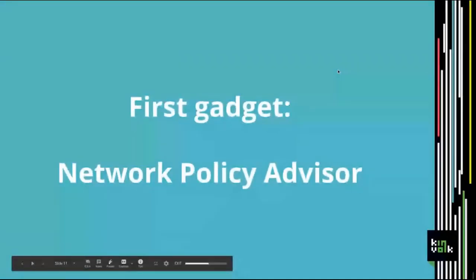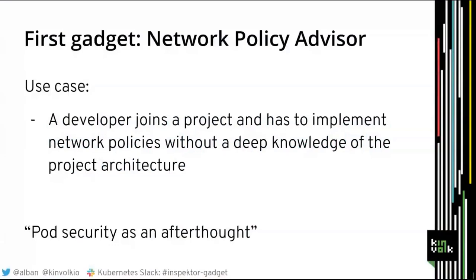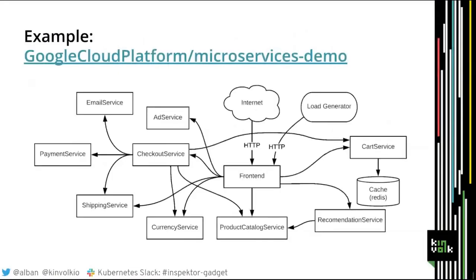The first gadget I'll present is the Network Policy Advisor. The use case: when a developer joins a project that already exists with many microservices and pods, but no network policies have been written, it's difficult to start writing network policies without knowing the architecture. This is what I call pod security as an afterthought — security was not designed from the beginning, and now we think about writing network policies.